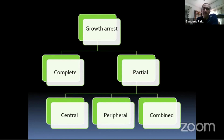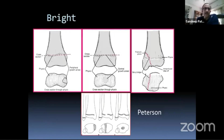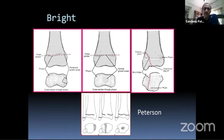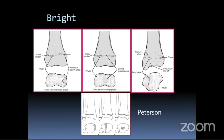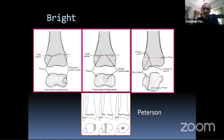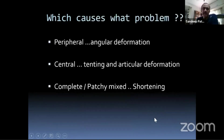Identifying what kind of growth arrest you are dealing with is very important to make a plan. On CT scans and tomograms in cross-section: a peripheral growth arrest, a central growth arrest, and a linear growth arrest as described by Peterson all have different consequences. Central growth arrest typically causes pulling down of the articular surface — especially upper tibia, lower femur — with a little shortening. Peripheral and linear growth arrests cause angular deformities.